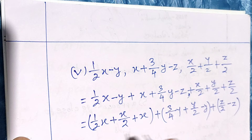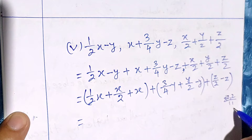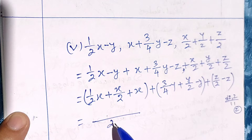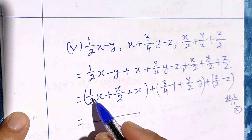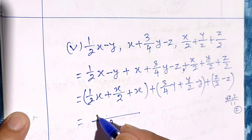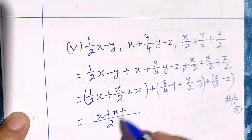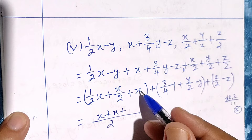We have denominators, so we need to find the LCM. For the x group, the denominators are 2 and 2, so LCM is 2. Dividing gives 1 each time; multiplying by numerators: 1 times x gives x, and 1 times x gives x, then the whole number x multiplied by 2 gives 2x.